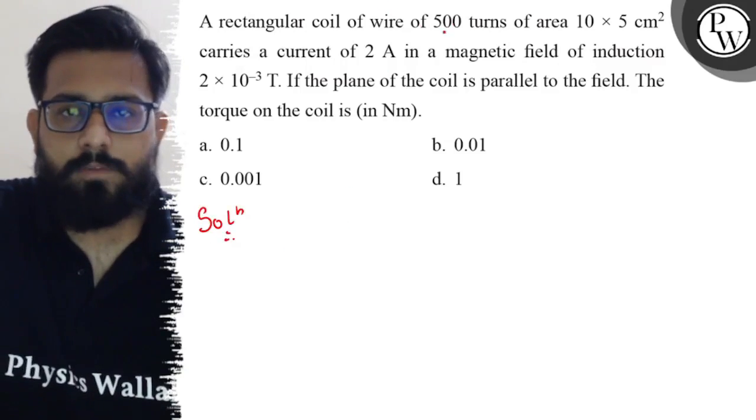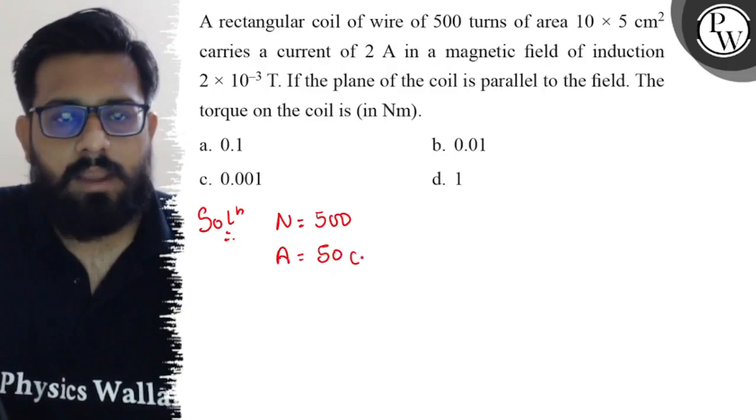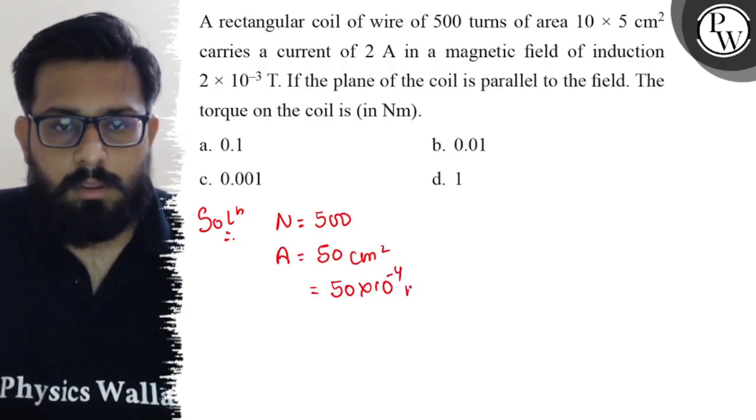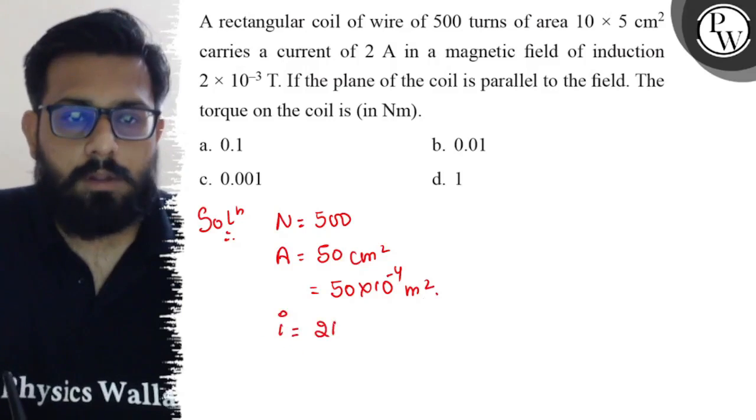So here in this question you have the number of turns which is equal to 500, having the area of 50 cm², which if you convert it into meters comes out to be 50 × 10⁻⁴ m². Then we have the value of current as 2 amperes.